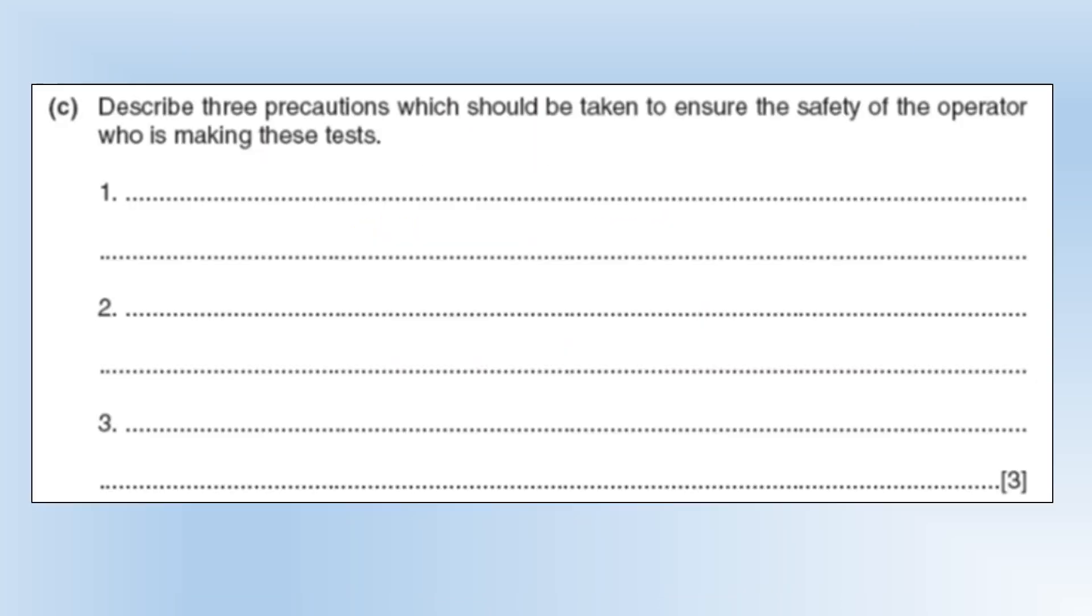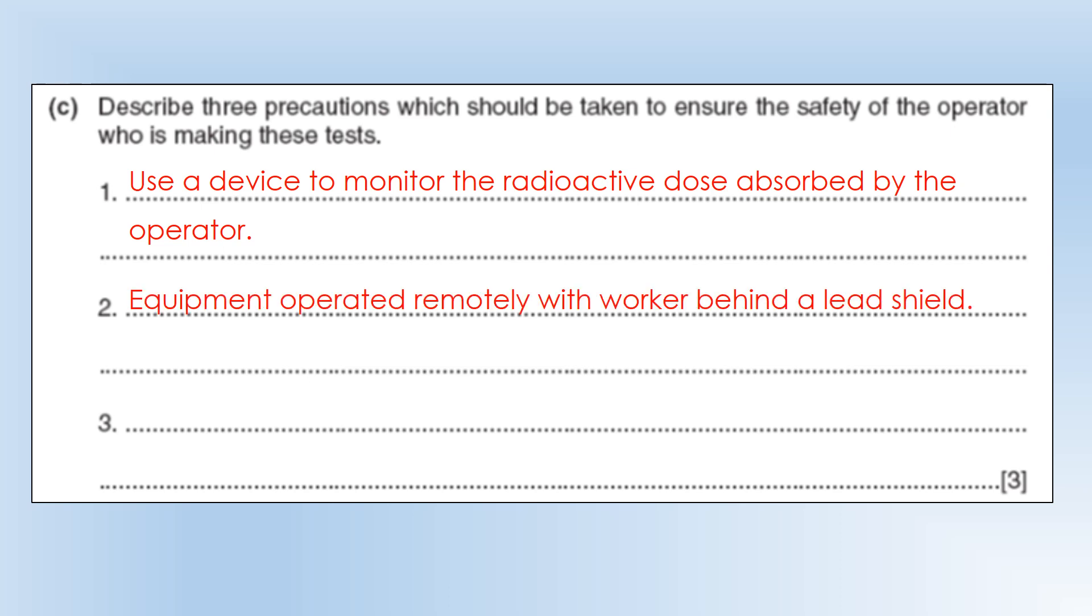Three precautions which should be taken to ensure the safety of the operator. Having marked a few of these, it's clear people haven't really thought about how this works. Remember we've got a liquid radioactive source, so using things like tongs are out because you can't hold a liquid with tongs. If I'm an operator I'm going to want a device to monitor the dose that I'm receiving first of all so we can check it stays safe. I'm also going to, if I'm using gamma, I don't want to be handling it myself. I want to be operating it remotely and I want to be behind some very thick shielding, probably lead or concrete. The other thing is I don't want to be spending long using it, so I want to minimize the time in which I'm taking measurements. All of these precautions are going to lead to a smaller dose of radiation and a smaller dose is a safer dose.